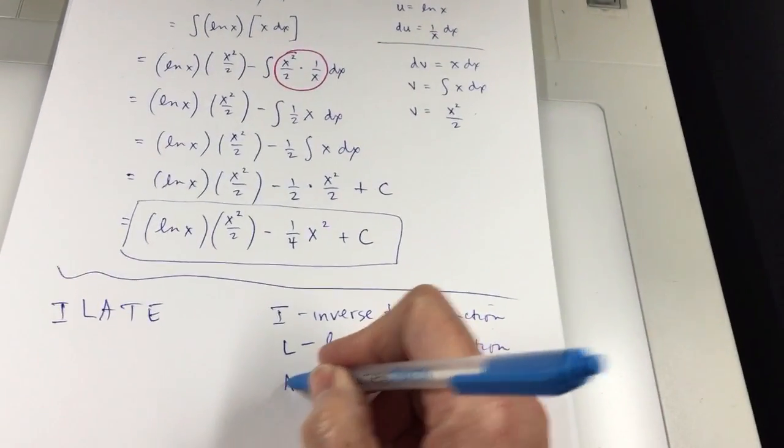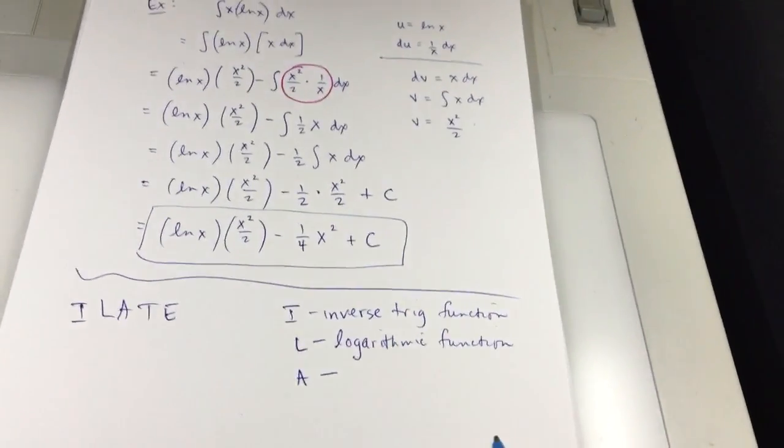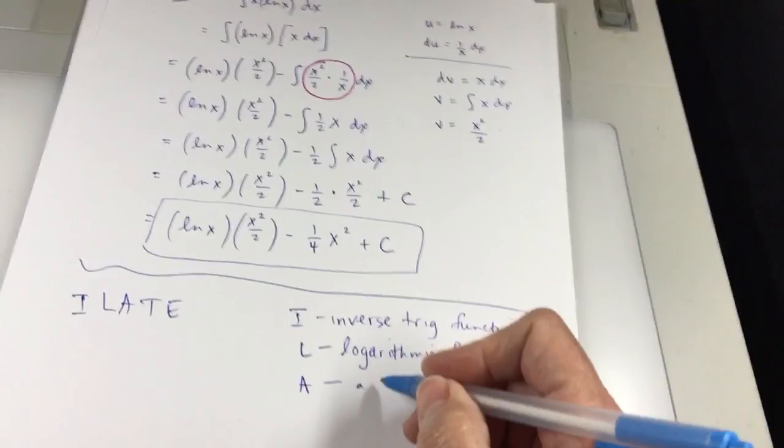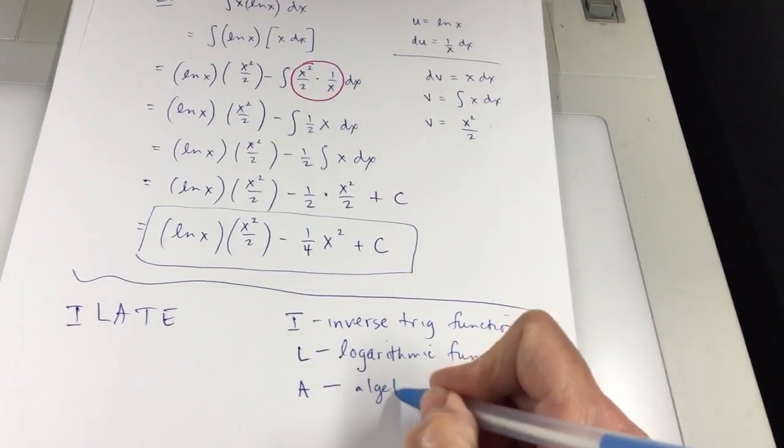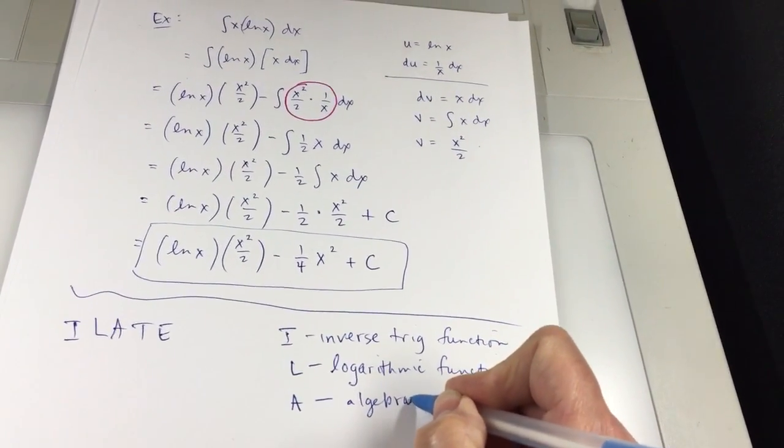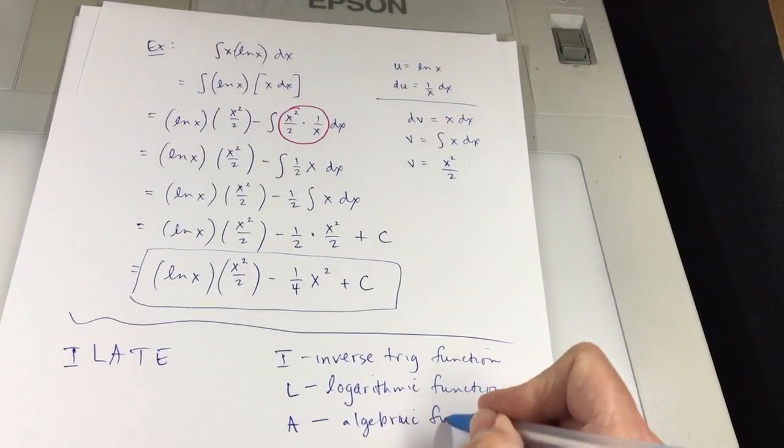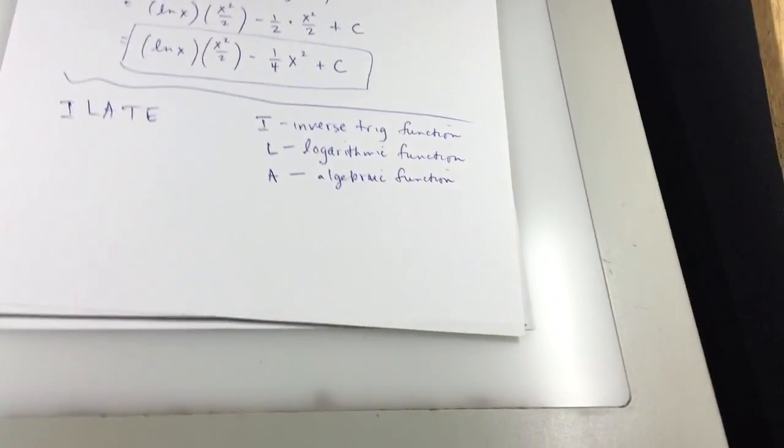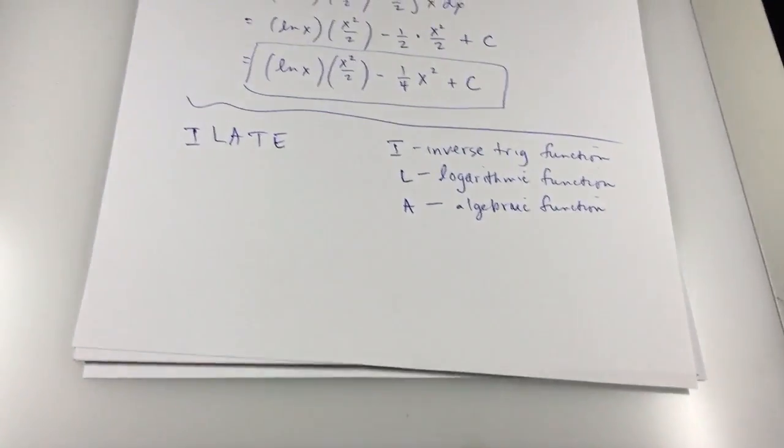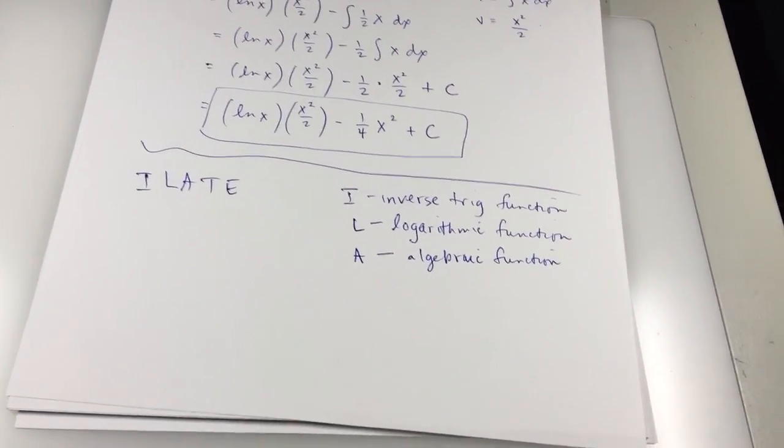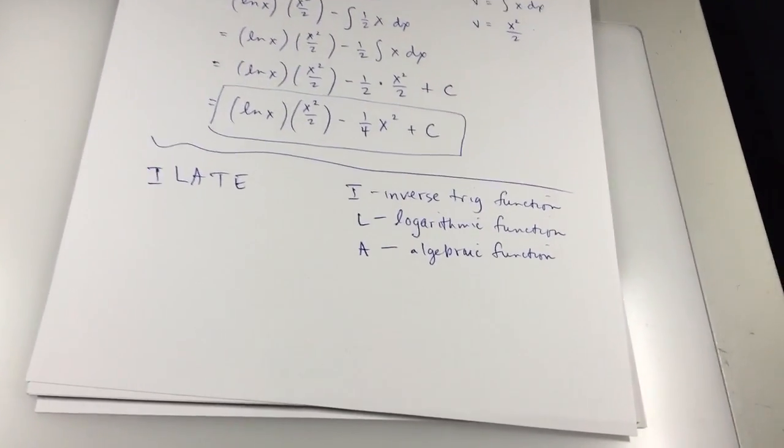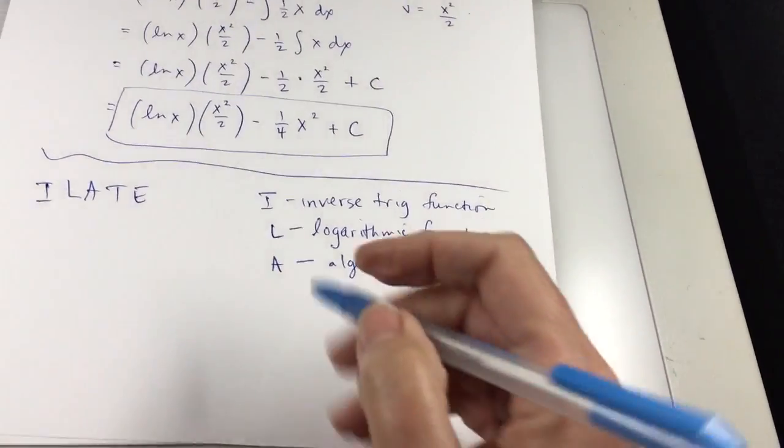If there's no log function, go to the A. That's algebraic function. That's your polynomials, linear expressions, maybe even a constant. You know, maybe it's something like two times something, and then you could just factor it out. But some algebraic expression.